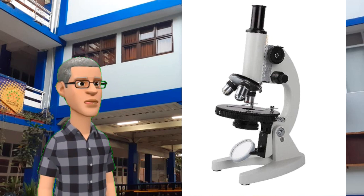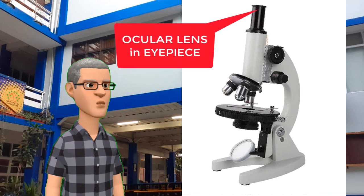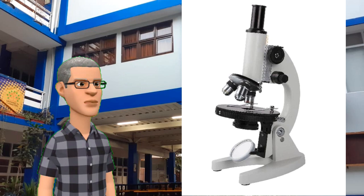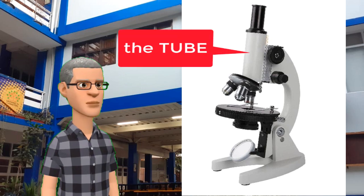Objective lens is connected to another lens called ocular lens which is located in an eyepiece. The tube that connects them is called tube.